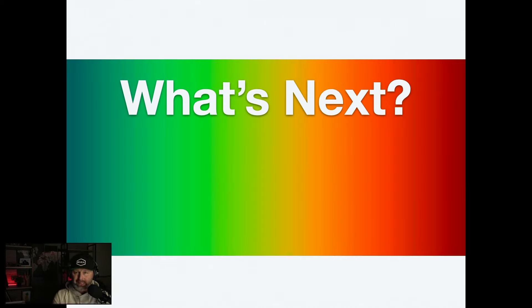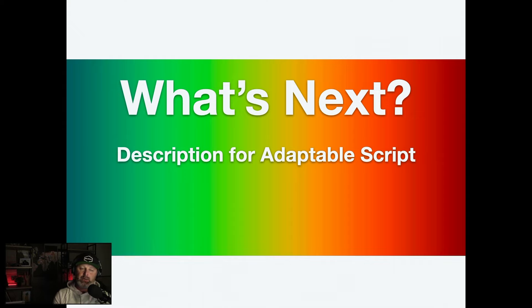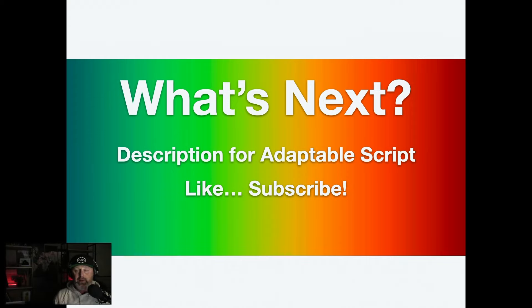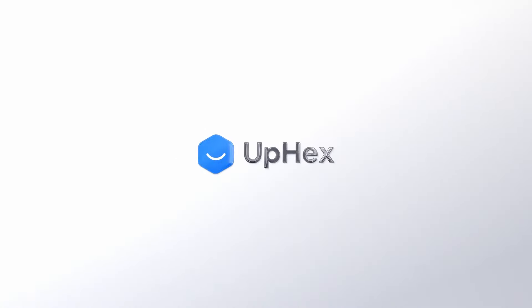In the description section below this video, there is an adaptable script. You can take that script, write it out yourself — go back through each section, listen to it, and write out the questions and the sequence you're going to get the most. That way you can really hone in on that script. Like and subscribe if this content is awesome and you appreciate it. If you want to learn how to sell SaaS to local businesses, go to upex.com, learn more, and we'll see you on the next video.